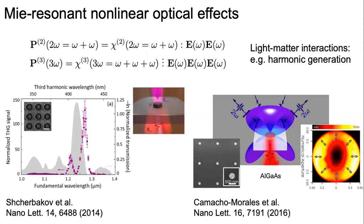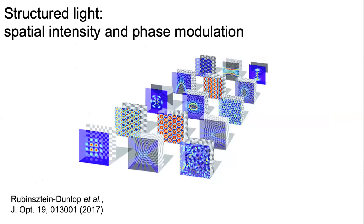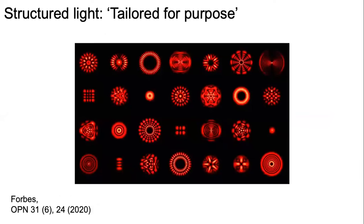Another way is to apply structured light to such particles. By structured light, people understand light with some spatial intensity and phase modulation. During the years, the interest in these structured light beams has not decreased.